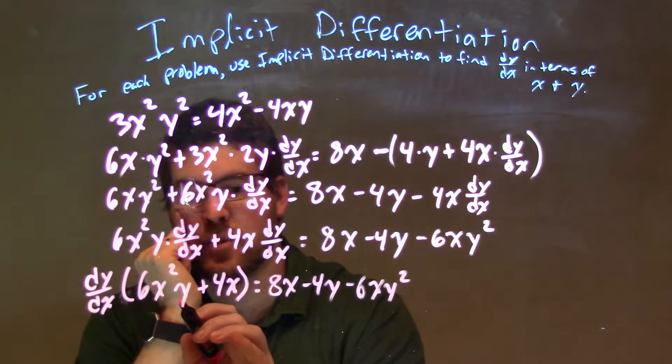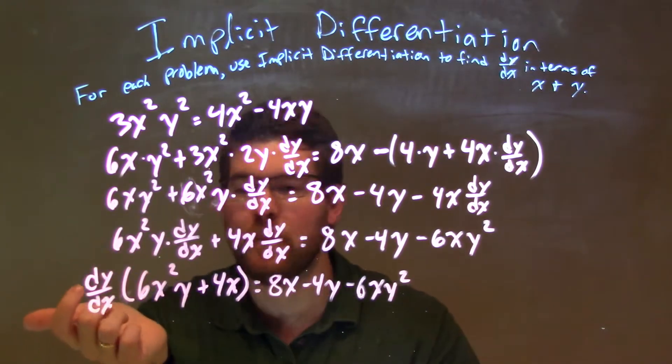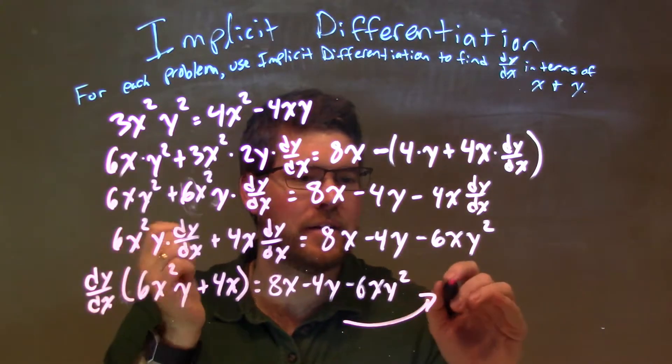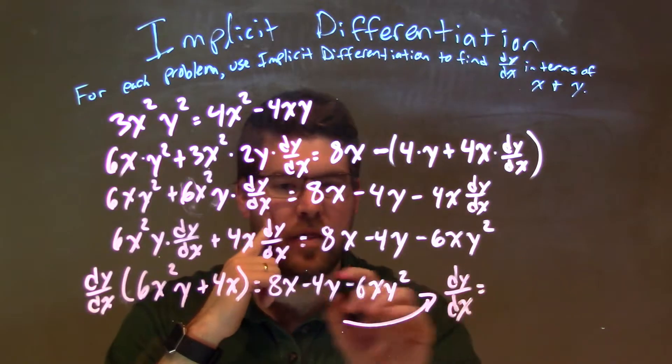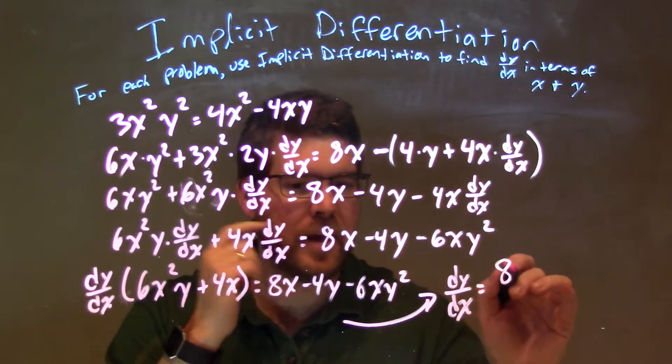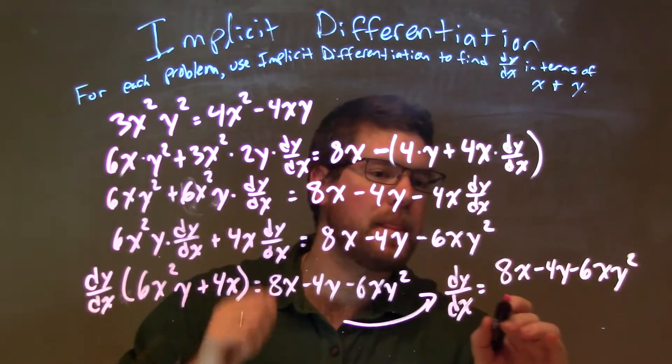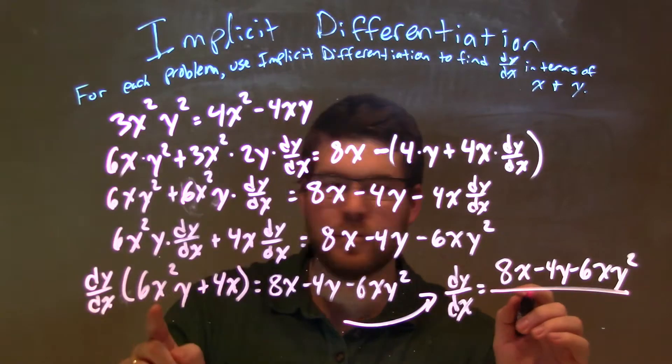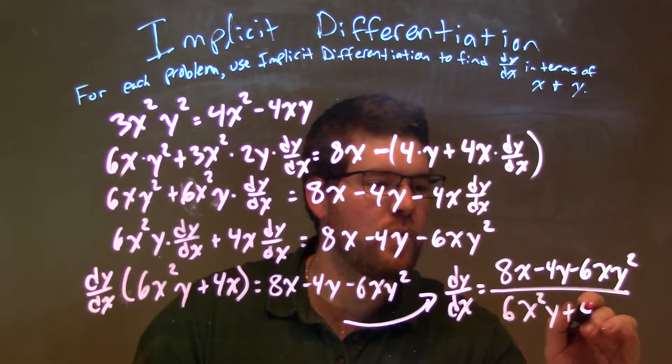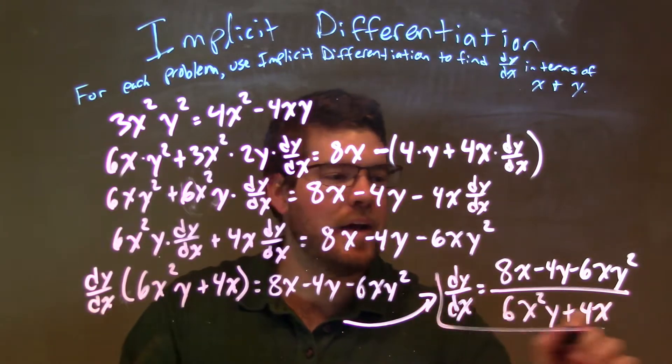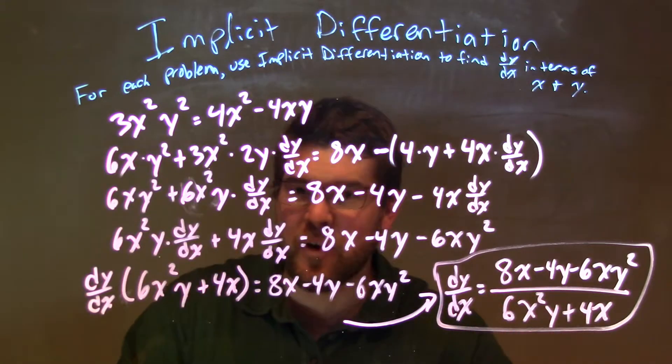Now I'm going to divide by 6x²y plus 4x to both sides, leaving me dy/dx by itself. So I'm going to write that over here to fit it all in: dy/dx equals, this would be my numerator, 8x minus 4y minus 6xy² all over my denominator, which is what I was dividing by, 6x²y plus 4x, and there we have our final answer. Now you might be able to simplify a little bit more, but it's fine as it is.